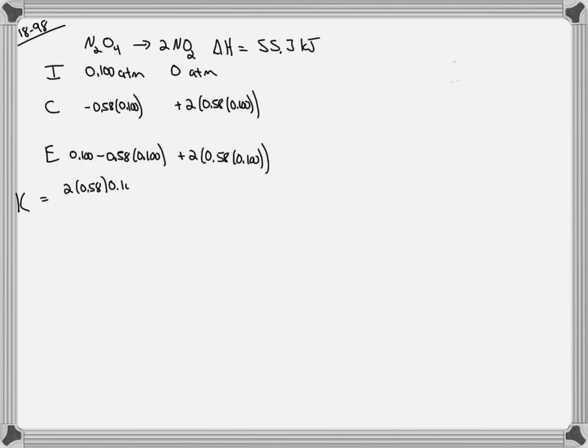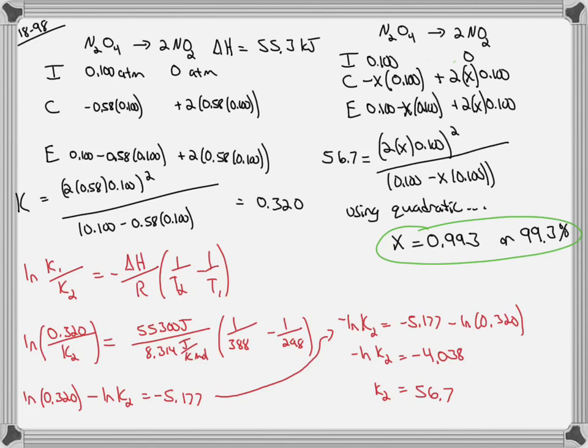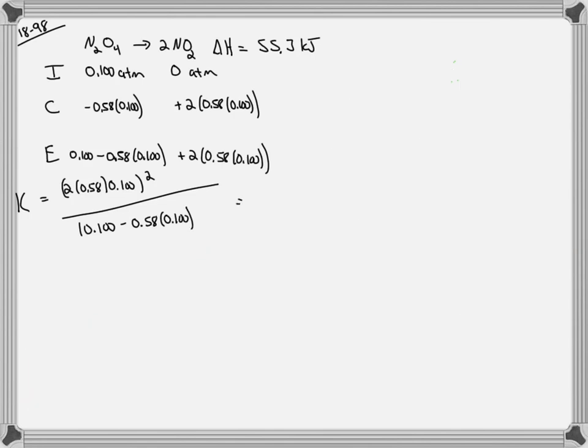To calculate the equilibrium constant we can take the final pressure of nitrogen dioxide and put it in the numerator of the equilibrium constant expression and then square that whole thing because we have a coefficient of 2 on nitrogen dioxide. We'll then divide that by the pressure at equilibrium of dinitrogen tetroxide and we get a K value that is equal to 0.320.